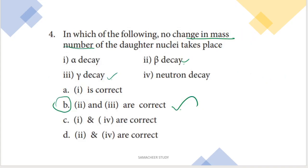Next: in which of the following is there no change in the mass number of the daughter nuclei? Alpha decay changes the mass number, but beta decay and gamma decay do not change the mass number. So the answer is option B — statements 2 and 3 are correct.